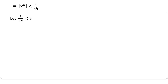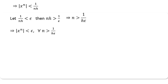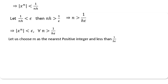Now, let 1/(nh) < ε, where ε is some positive number. This implies nh > 1/ε, which means n > 1/(hε). Therefore, |x^n| < ε for all n greater than 1/(hε). We choose m as the nearest positive integer greater than 1/(hε). Then |x^n| < ε for all n after m.